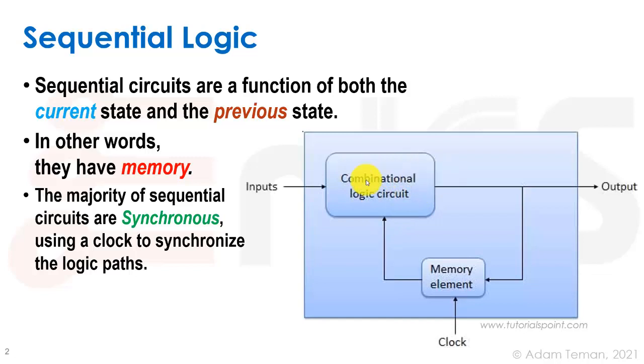So we take the current state, the previous answer to what our inputs provided as outputs, and we want to provide that as additional inputs. So for this we need some sort of a memory element.